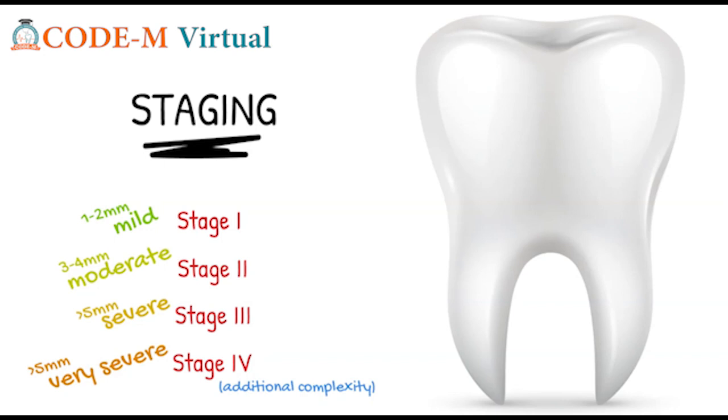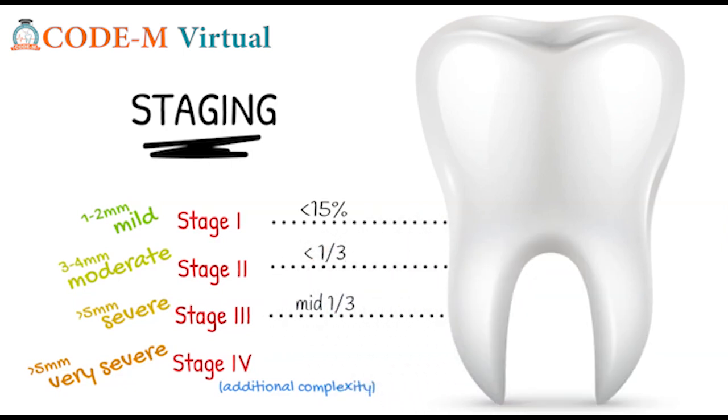Now again we will discuss a little bit about the staging. Staging of periodontitis as described by the AAP-EFP involves an assessment of the greatest site of clinical attachment loss, an assessment of bone loss and tooth loss due to periodontitis, and other factors such as maximum pocketing depth, pattern of bone loss, furcation involvement, ridge defects, occlusal trauma, and restorative needs. This is just a revision of the chart discussed before. The staging goes from mild to moderate to severe to very severe — Stage 1 through Stage 4.